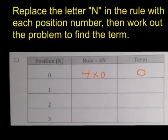I'm going to move down to the second row. It says my position number is 1. So I'm going to write 4 times 1. And the answer is 4.